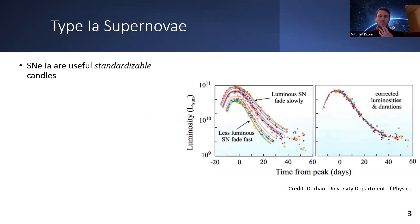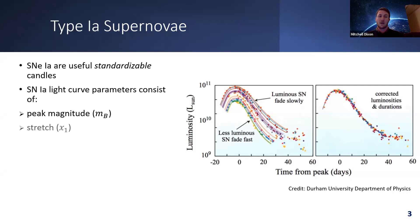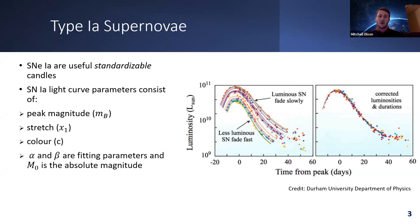Type 1a supernovae are useful standard candles but need to be standardized for use in measuring distances. Light curves are corrected using peak magnitude, stretch (width), and color, which along with other fitting parameters and the absolute magnitude allow us to find the observed distance modulus. From this we can define a Hubble residual — the deviation between the observed distance modulus and the inferred value given our current Lambda-CDM model at a given redshift.